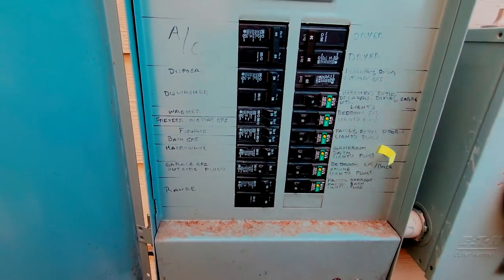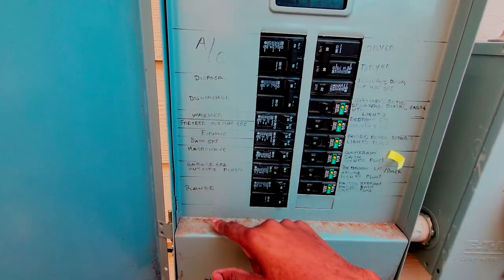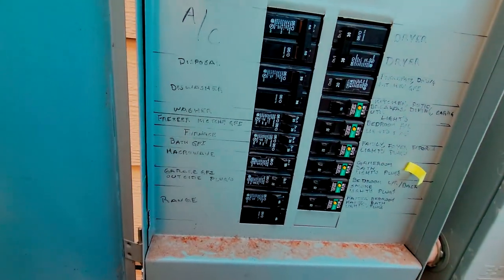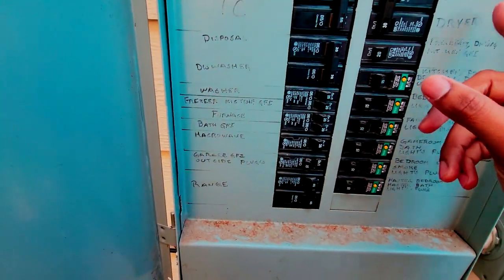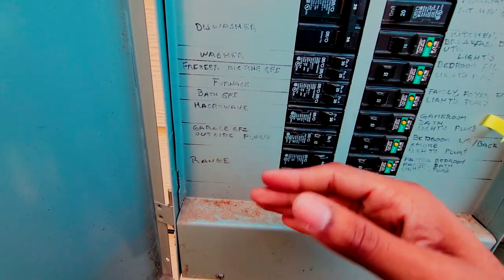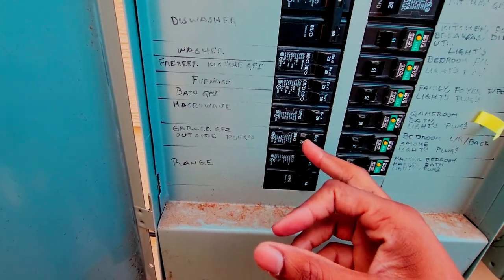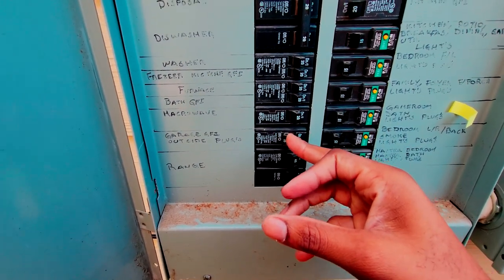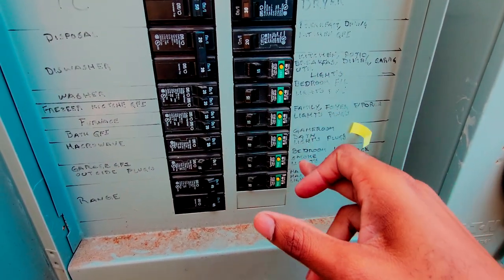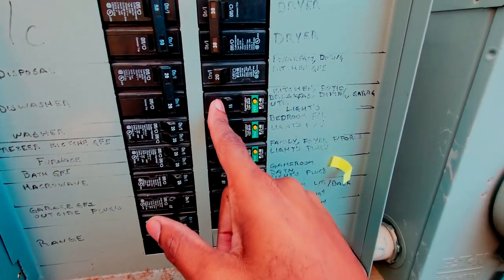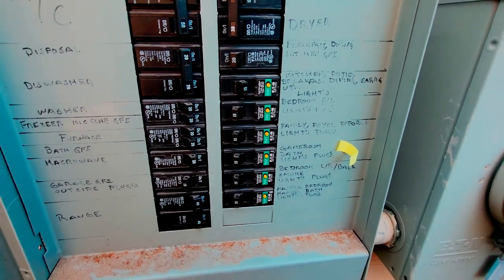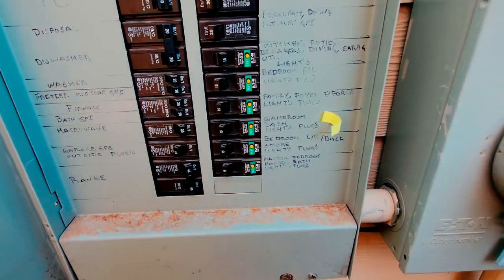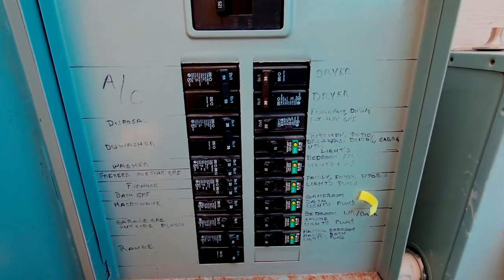Hopefully if you had your home built or if you're renting a house, hopefully they have everything labeled for you. You also have a little diagram on the side most of the time. So we got the main, we got the AC, garbage disposal, dishwasher, washer and dryer, the freezer, so forth and so on. Since we're doing a garage, I already flipped the switch - this one and also this one. But this one is also connected to the kitchen and the patio.